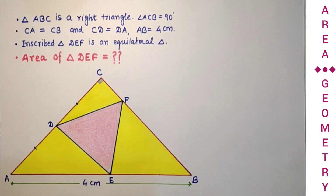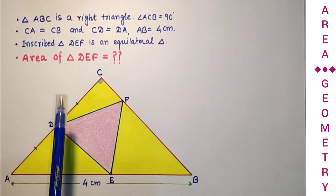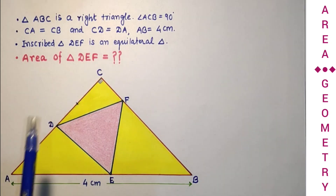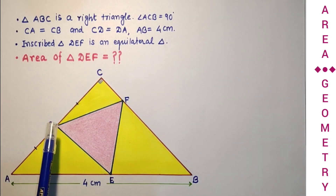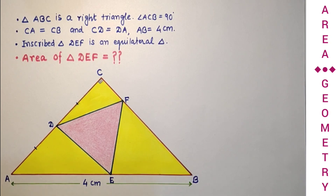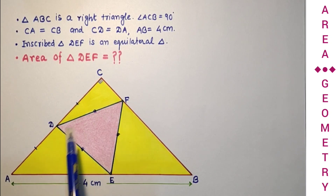Hi everyone and welcome to my channel. Today we will do this interesting question. We are given a right angle triangle, right angle at C, and CA is equal to CB. D is the midpoint of CA, so CD is equal to DA. The length of AB, the hypotenuse, is given as 4 cm, and the inscribed triangle DEF is an equilateral triangle. We have to find the area of this shaded equilateral triangle DEF.